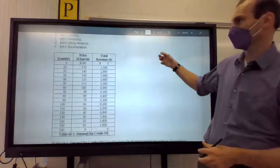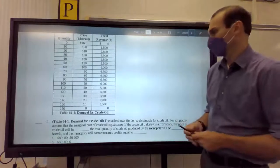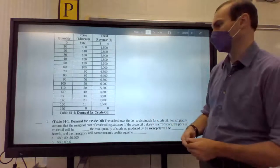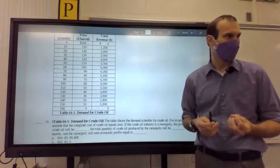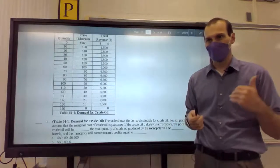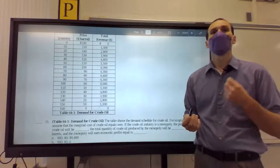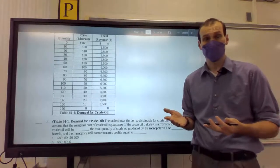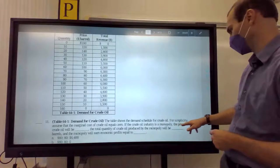All right, let's hit 11. 11 is a very simple question, as long as you know how to read the question. So the table shows the demand schedule for crude oil. For simplicity, assume the marginal cost of crude oil equals zero. If marginal cost is zero, then their cost of producing is what? Zero. They're a zero cost producer. That means their profit is equal to what? As much as they produce. It's like total revenue. Total revenue. Profit and total revenue equal each other. So to make more profit, you just maximize total revenue. Okay, so let's keep going.